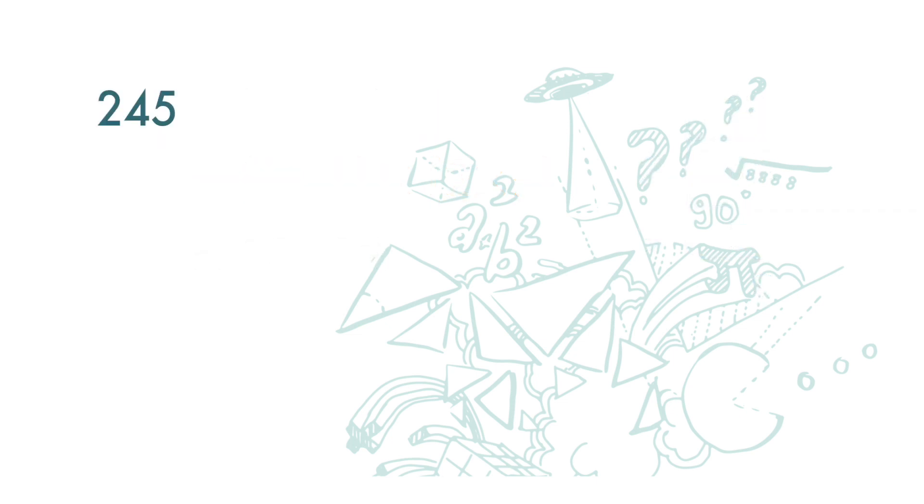How about this number 245? We wanted to know if 245 is a perfect square. Let's divide it with a prime number. 5 is a good number to start with. 245 divided by 5 is 49. 49 divided by 7 is 7. So 245 is equal to 7 times 7 times 5, and we can see that 245 is not a perfect square.